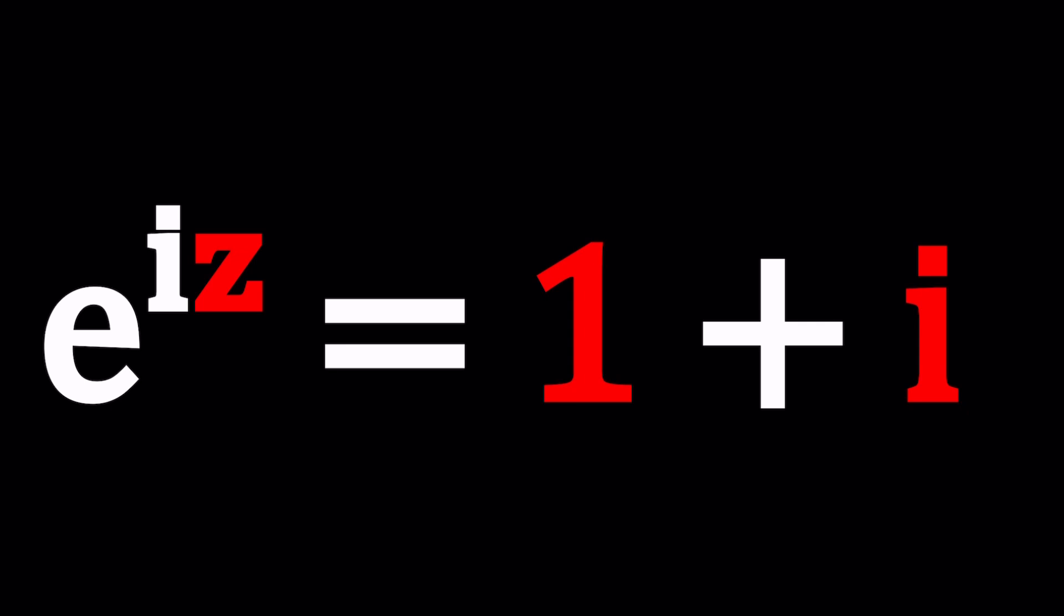I hope I haven't made this problem before because it looks very familiar, but I kind of like these kinds of questions that are especially exponential. So we have e to the power iz equals 1 plus i. So we see the i twice, what is i?